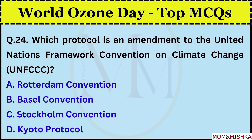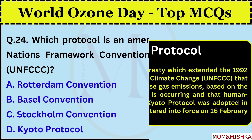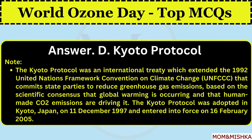Which protocol is an amendment to the United Nations Framework Convention on Climate Change? The Kyoto Protocol was an international treaty which extended the 1992 United Nations Framework Convention on Climate Change. It commits state parties to reduce greenhouse gas emissions based on the scientific consensus that global warming is occurring and that human-made CO2 emissions are driving it. The Kyoto Protocol was adopted in Kyoto, Japan on 11 December 1997 and entered into force on 16 February 2005.